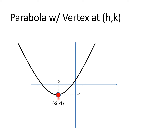Let's say again we have a parabola that opens upward with vertex at (h,k). For example, the vertex is opposite the negative 2 value along the x-axis, so h is negative 2. The x-coordinate of our vertex is negative 2. And our vertex is also across the negative 1 value of the y-axis, so the y-coordinate of our vertex is negative 1. That means h is negative 2 and k is negative 1.